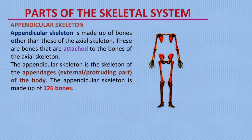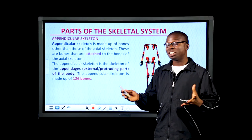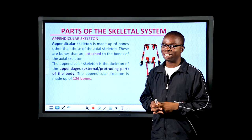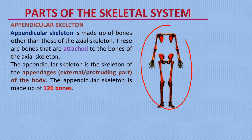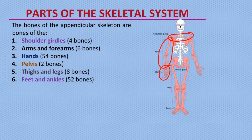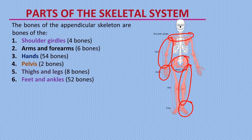The appendicular skeleton is simply what remains when you remove the axial skeleton from the body — the bones that are left make up the appendicular skeleton. It consists of bones that make up the appendages, which are the external protruding parts of the body attached to the axial skeleton. There are 126 bones: 4 bones of the shoulder girdle, 6 bones of the arm and forearm, 54 bones of the hand, 2 bones of the pelvic girdle, 8 bones of the thigh and legs, and 52 bones of the feet and ankles — totaling 126 bones.